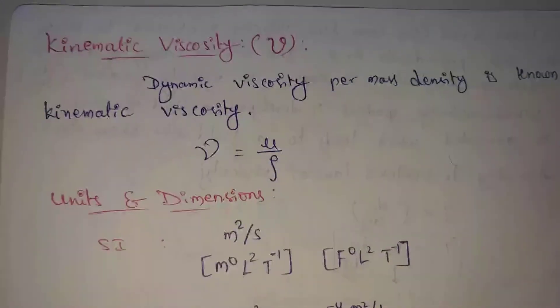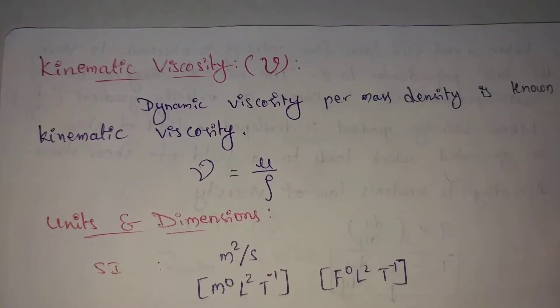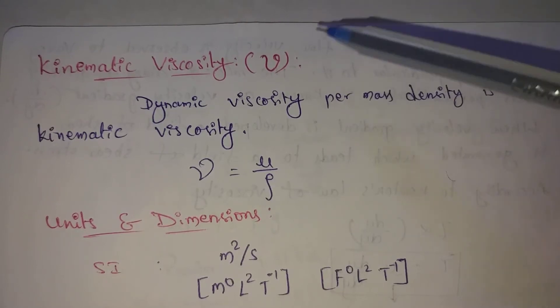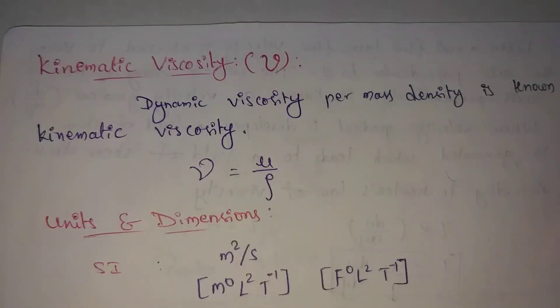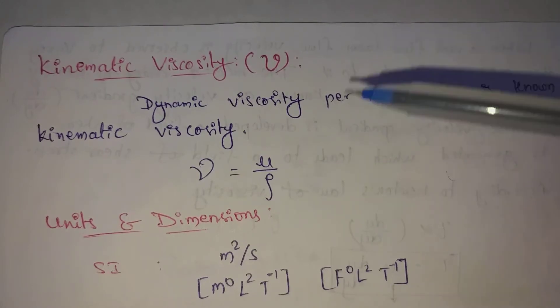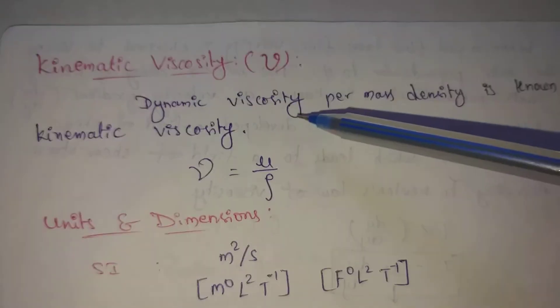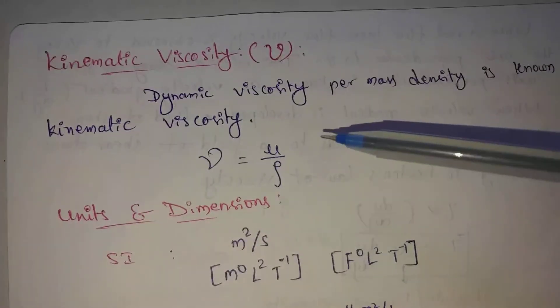Next topic: Kinematic Viscosity, denoted as nu. Kinematic Viscosity nu equals mu divided by rho — Dynamic Viscosity divided by density. The definition: Dynamic Viscosity per mass density is known as Kinematic Viscosity.